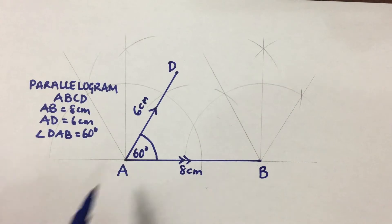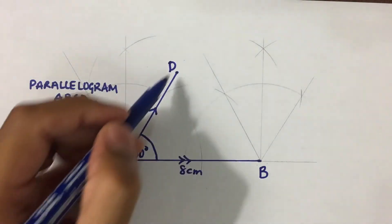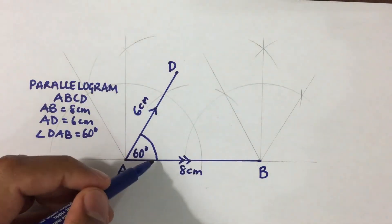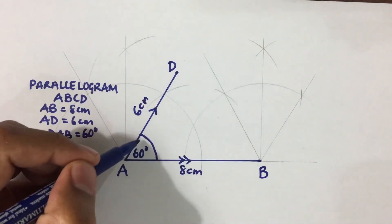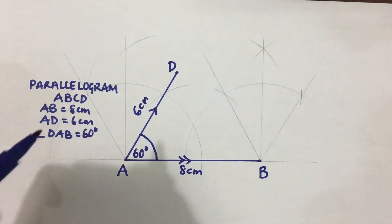And now we need to draw a line that is parallel to AD. Now if we look at the slant of AD, it makes 60 degrees with the base.